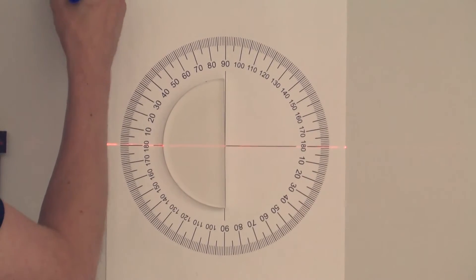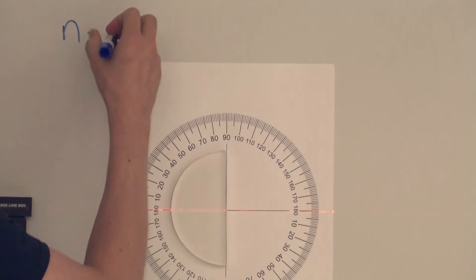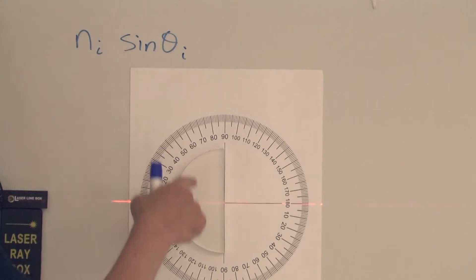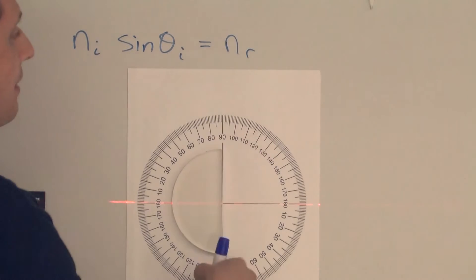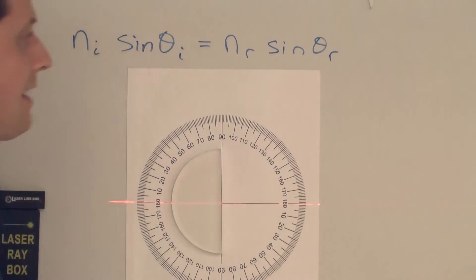And so Snell's Law is n_i, index of refraction of the medium on one side of the boundary, times sine of theta i, where theta i is the angle of incidence on that boundary. And that's going to equal the index of refraction on the other side of the boundary times the sine of the refracted angle.